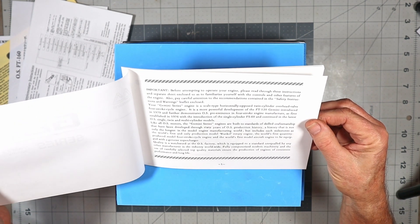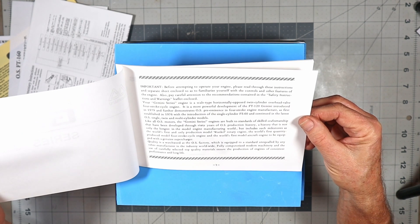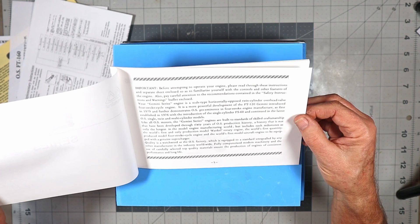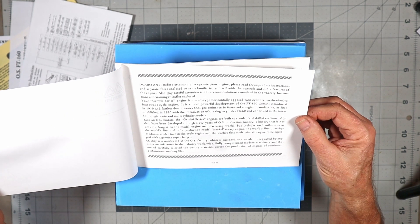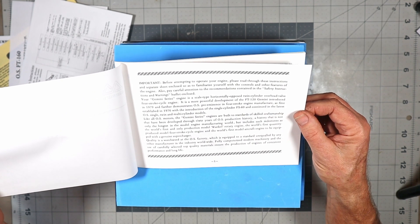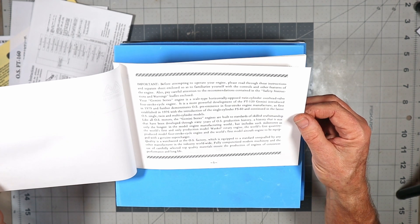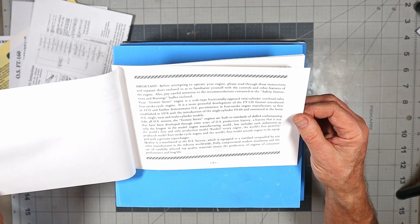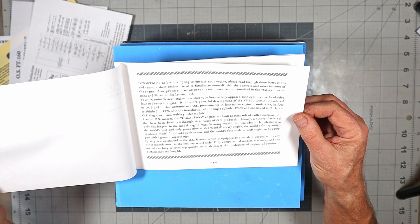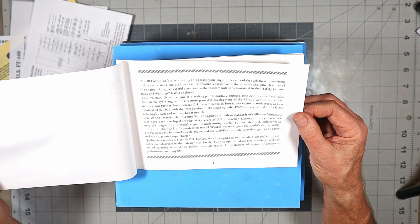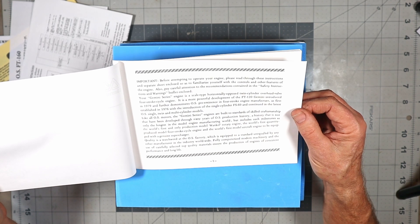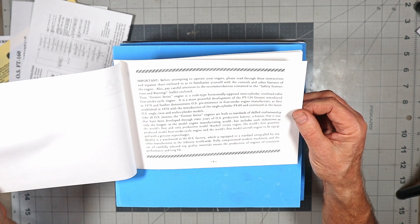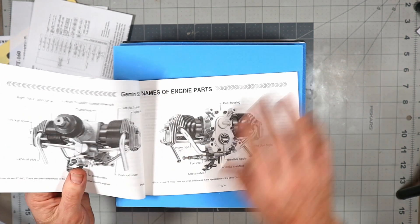The manual says: 'Your Gemini series engine is a scale-type horizontally opposed twin-cylinder overhead valve four-stroke cycle engine. It is the more powerful development of the FT 120 Gemini introduced in 1979 and further demonstrates OS pre-eminence in four-stroke engine manufacture, first established in 1976 with the introduction of the single-cylinder FS 60.' So it talks about some dates there, which is interesting.